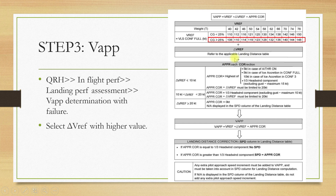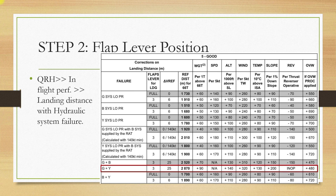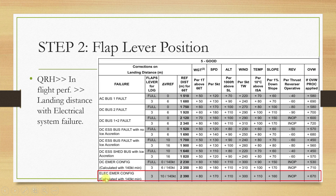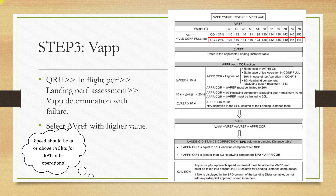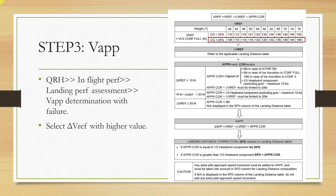The second step is the calculation of delta V ref. Since we are facing multiple emergencies, we have to choose the delta V ref having the higher value. We go and look at the landing resistance table of both failures and choose the higher value. For hydraulic system failure (green plus yellow), delta V ref is 25 knots. For AC bus 1 plus 2, that is ELEC MR config, delta V ref is 10 knots at 140 knots, because in ELEC MR config the RAM air turbine is only functional at 140 knots. So clearly the higher delta V ref is 25, which is for the green plus yellow hydraulic failure.